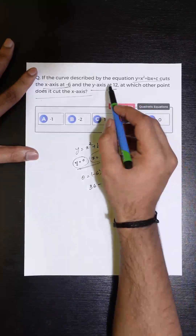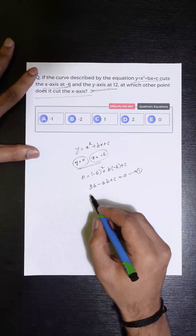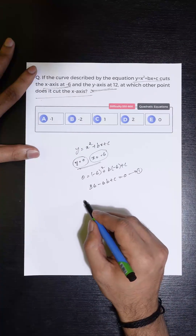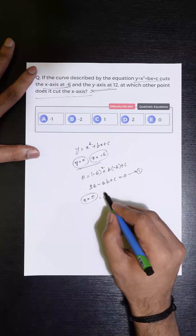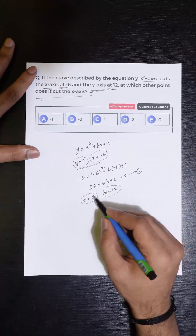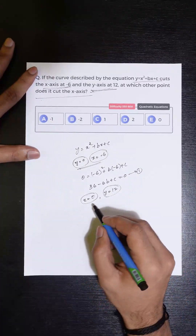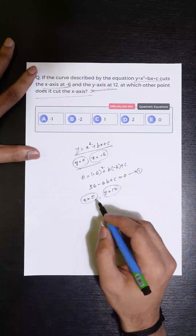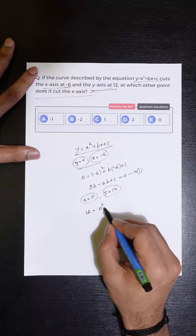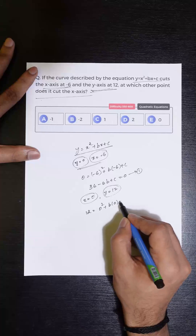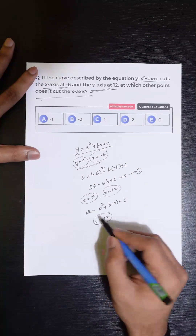We are also given that the curve cuts the y-axis at 12. When the curve cuts the y-axis, the x-coordinate is 0 and the y-coordinate is 12. Substituting into the equation, we get 12 = 0² + b(0) + c, so the value of c is 12.